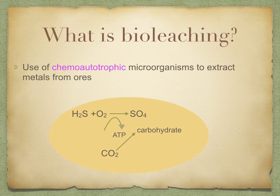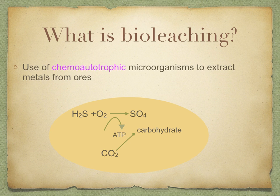Let's move on to what is bioleaching. Bioleaching is the use of chemo-autotrophic microorganisms to extract metals from ores. These are colorless bacteria that manufacture carbohydrates from inorganic raw materials, and they use the energy from oxidizing some reduced substance in the environment. The free energy released by the oxidation is then used in carbohydrate manufacture. Here you can see an example: carbon dioxide is being used to make a carbohydrate, with the energy being used in that synthesis.